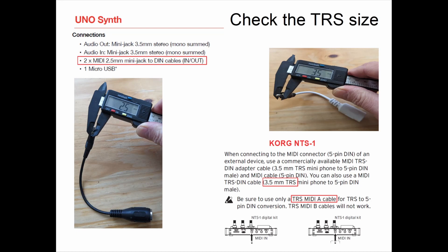On the left here is the Uno Synth — this is copied right out of the back of the manual. You can see they call out that it has a MIDI 2.5 mini jack to DIN adapter. And I did measure it — I have one of these — and indeed it is a 2.5 jack, which is not a standard headphone jack. This won't work with the Korg NTS-1 or an Arturia Beatstep Pro, as those need a 3.5 millimeter. Over on the right, the Korg NTS-1 — again, copied from the manual — calls out a 3.5 millimeter tip ring sleeve adapter, and it does say the NTS-1 needs a TRS MIDI type A cable. With that information — a 3.5 TRS, type A — you should be able to go out and buy the right cable for the NTS-1.